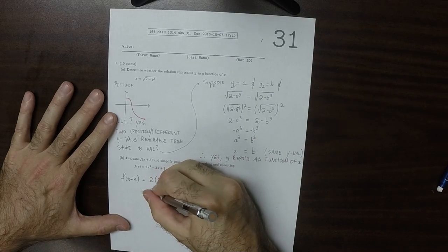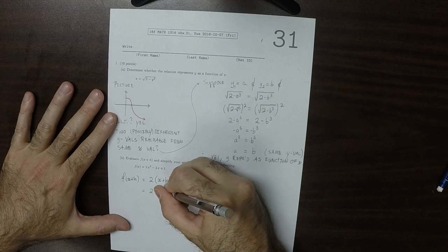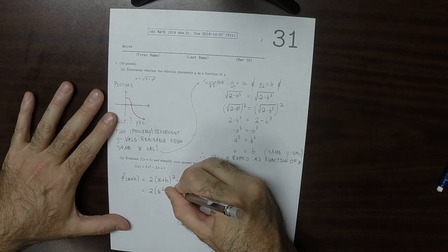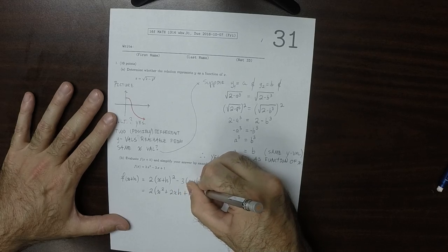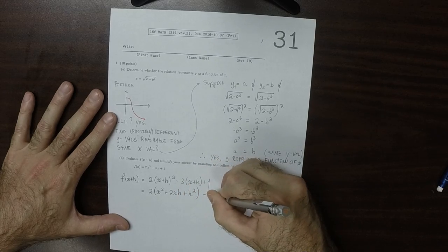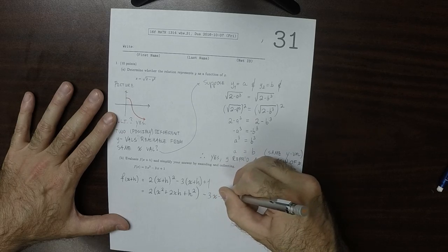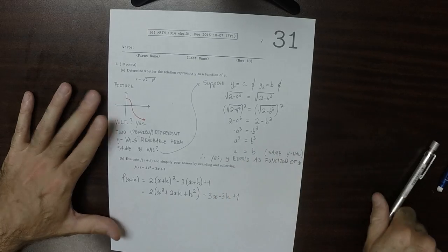So that would be 2 and then x squared plus 2xh plus h squared and then minus 3x minus 3h and then plus 1.